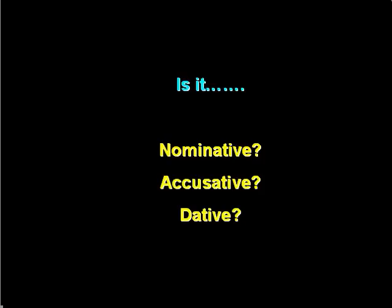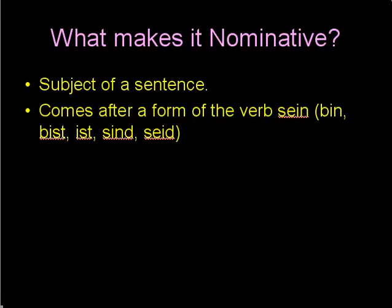We're going to do some examples to show you how they change. The first thing you should know is what makes something nominative. If it is the subject of a sentence, it is considered in German to be in the nominative case. Or if it comes after a form of the verb sein, which means 'to be'. That form can be any conjugation of it, such as bin, bist, ist, sind, seid.